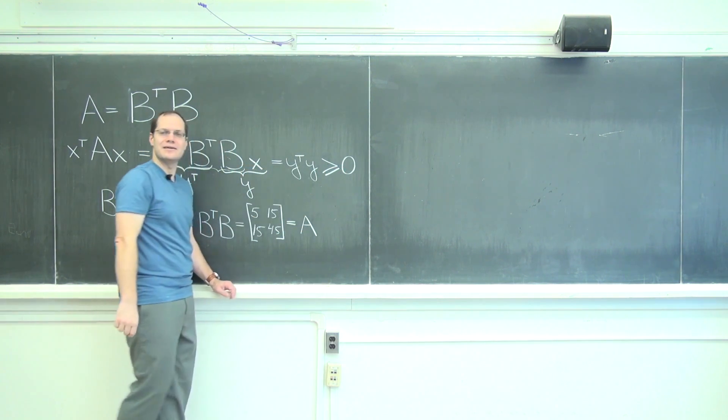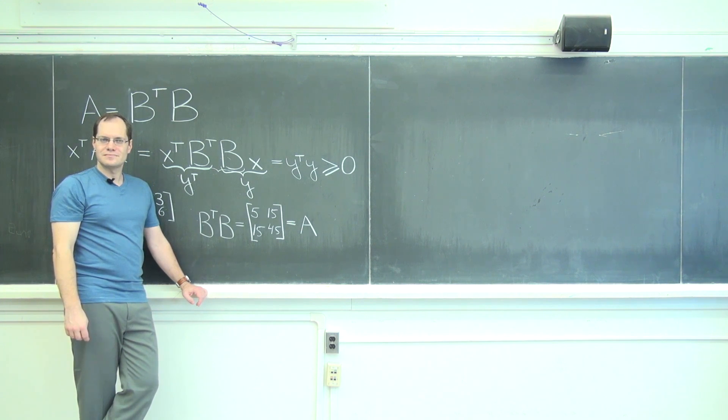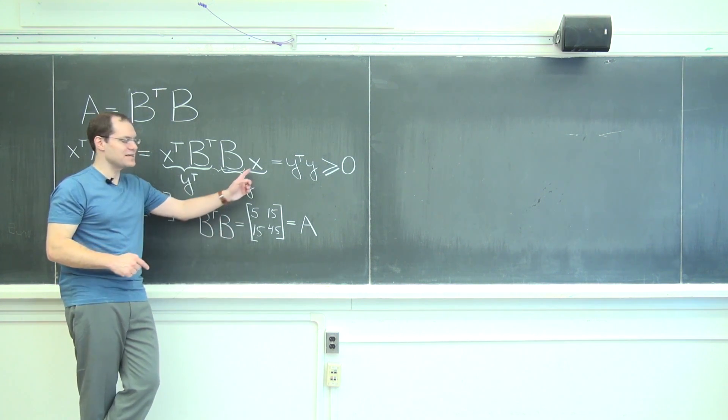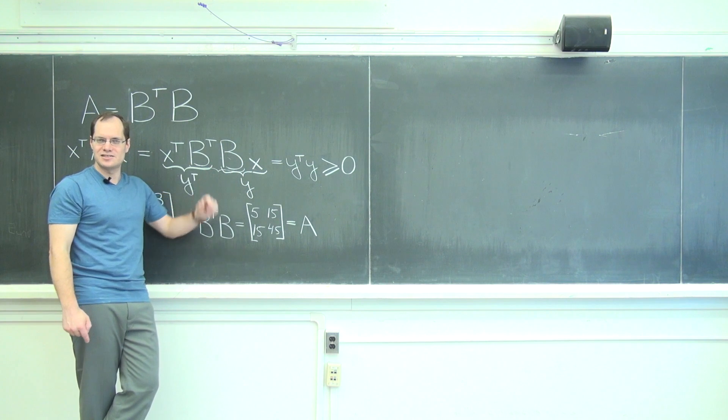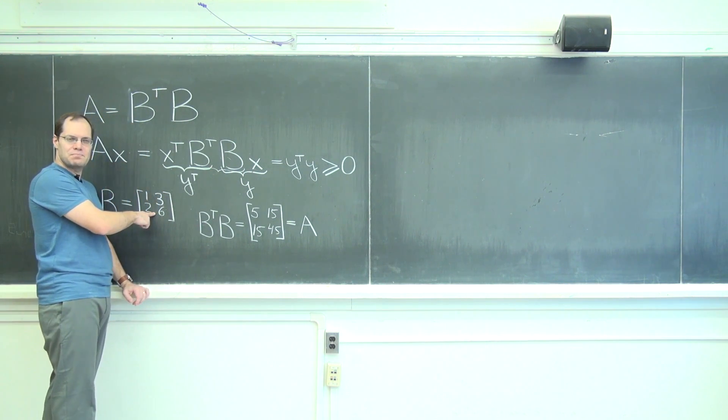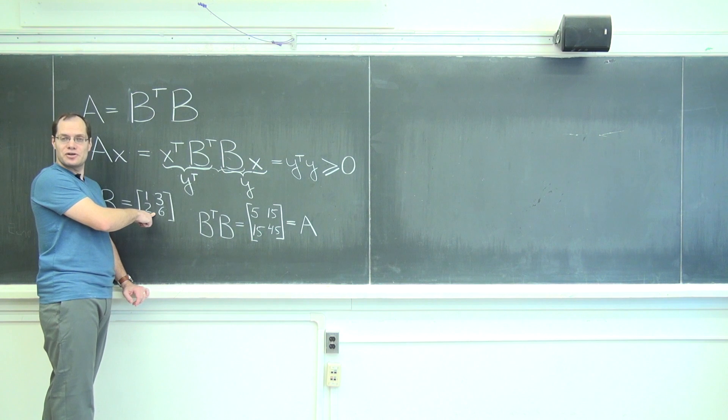This is the best I can claim: Y transpose Y is greater than or equal to 0. Because Y can still be 0 if X is nonzero and X is in the null space of B. So of course, for the matrix B I chose a singular matrix.